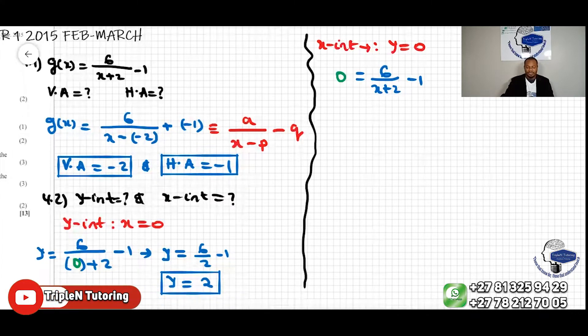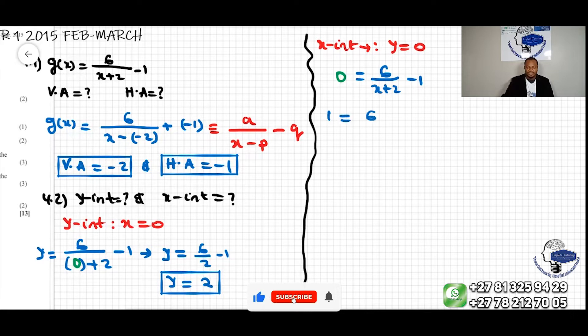Now, if you move negative 1 over this other side of the equal sign, this will be a positive 1 equal to 6 over x plus 2.